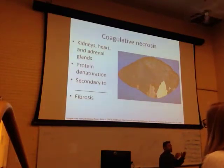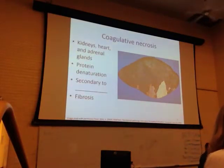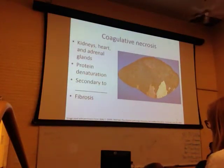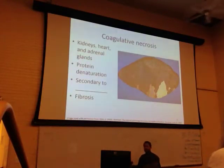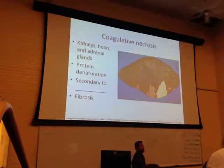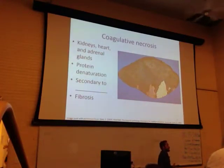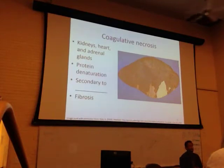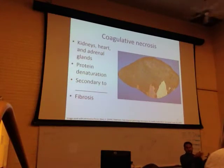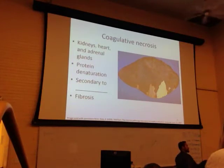Coagulative necrosis is typically secondary to acute ischemia, where you've reduced blood flow to the area and lowered oxygenation of that tissue. Without oxygen present, how well can you make ATP? You can't make it very well. You can still make small amounts using the glycolytic pathway, but without oxygen as the final electron acceptor, you cannot run through the electron transport chain and generate copious amounts of ATP.